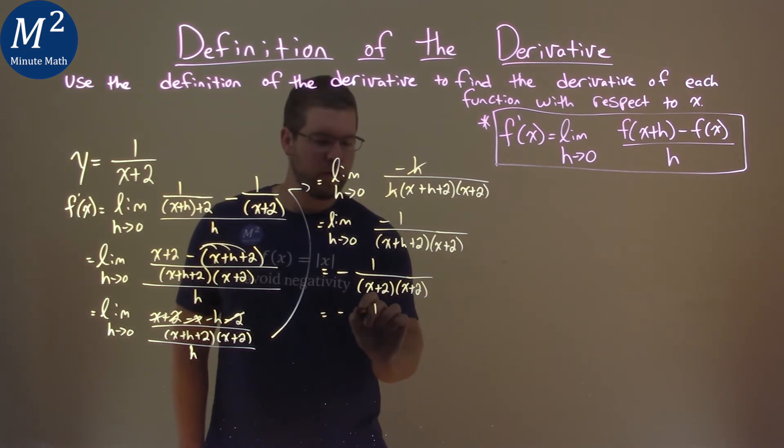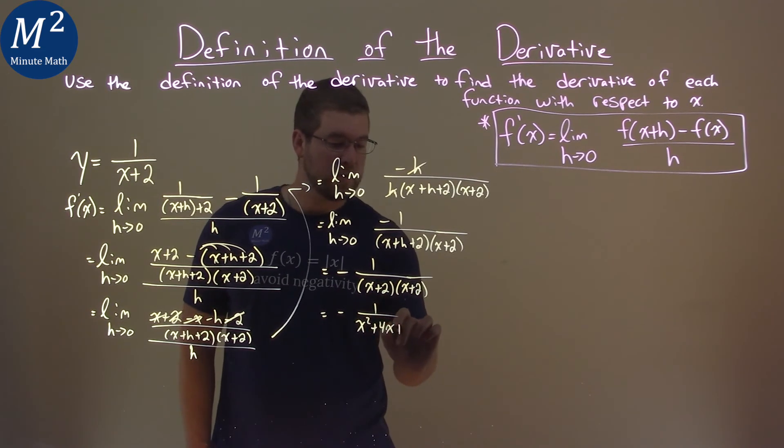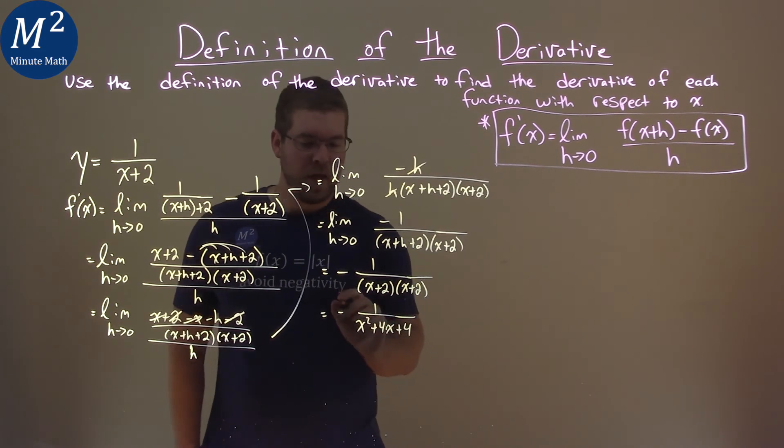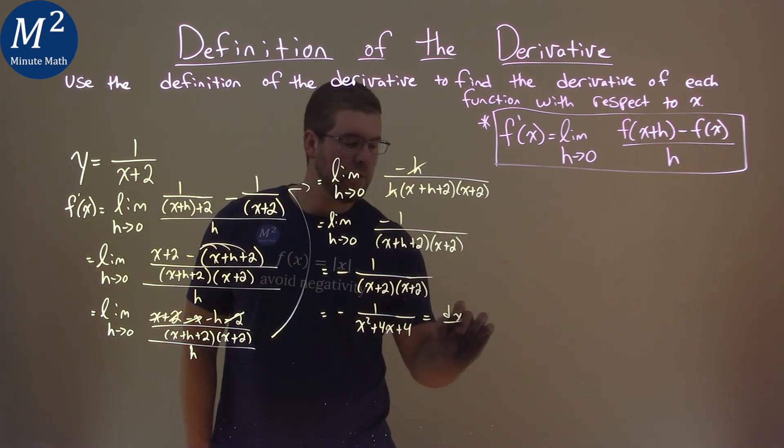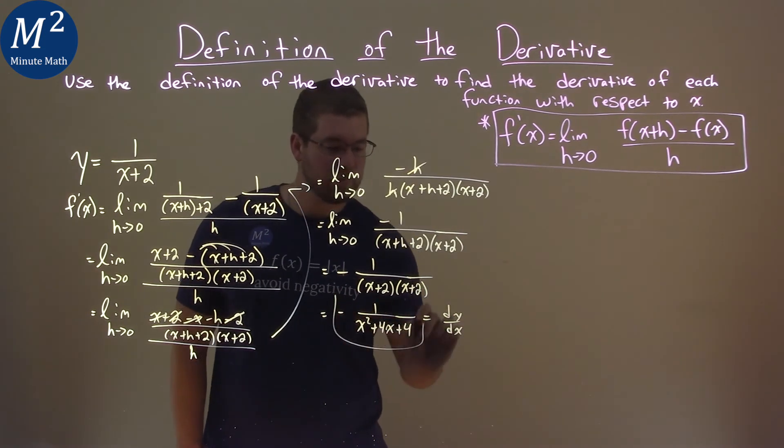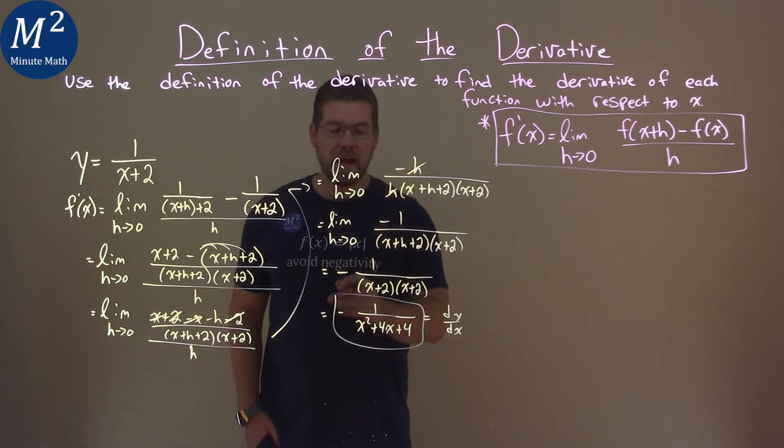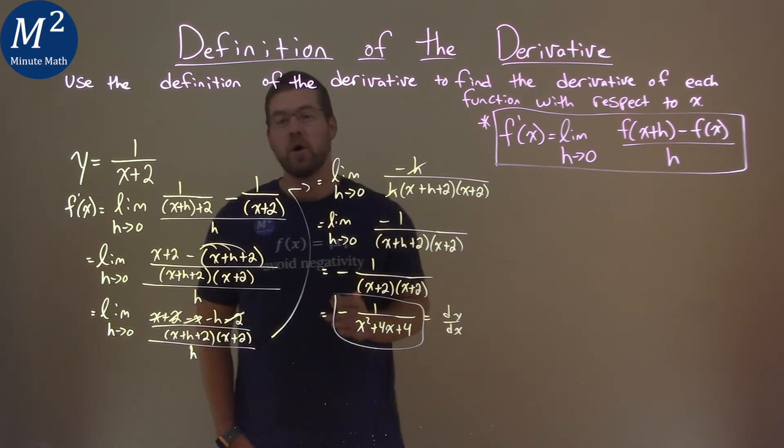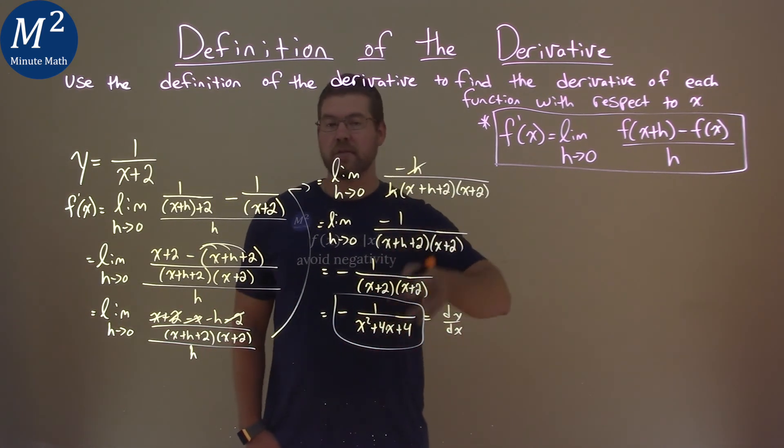Simplify that out. Negative 1 over, multiply that out, we have x squared and then plus 4x plus 4. And so our final answer, our dy dx here, our derivative, is negative 1 over x squared plus 4x plus 4.